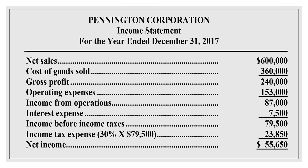P Corporation Income Statement for the year ended December 31: Net sales $600,000 minus cost of goods sold $360,000 equals gross profit $240,000. Minus operating expenses $153,000 equals income from operations $87,000. Minus interest expense $7,500 equals income before income tax $79,500. Minus income tax expense (30% × $79,500) = $23,850. Net income equals $55,650.